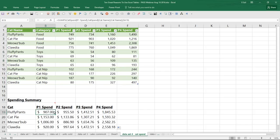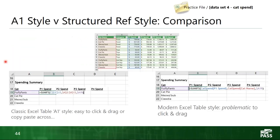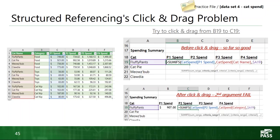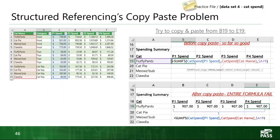That is how to create an absolute reference in a structured referencing formula. I should also call attention to the fact that copy-paste is also problematic with structured referencing if you don't have those fixed references set up correctly. If I had tried copy-paste instead of click-and-drag, even if my first formula was correct, the moment I copy-paste across, it puts the exact same formula verbatim all the way across — which is why we see 907s across the board. You cannot get around this with copy-paste; you have to use this technique. Maybe Microsoft will fix it and put dollar signs in — that would be a lot easier.